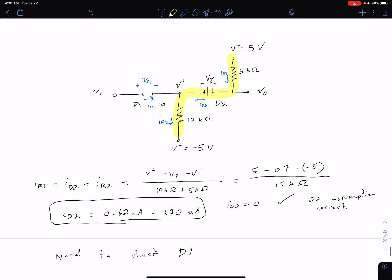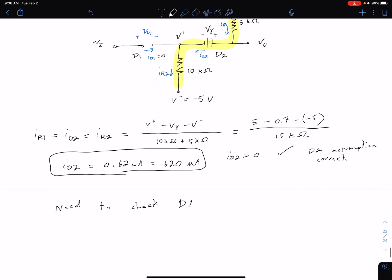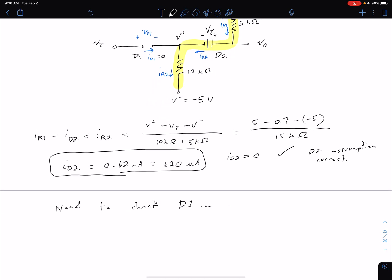So let's go ahead and check our assumption for D1. And we do that by checking our diode voltage because we assumed it was off. So check our diode voltage. So from KVL we can do a KVL around this way or really we can think about it as just to this V', however you want to do it.